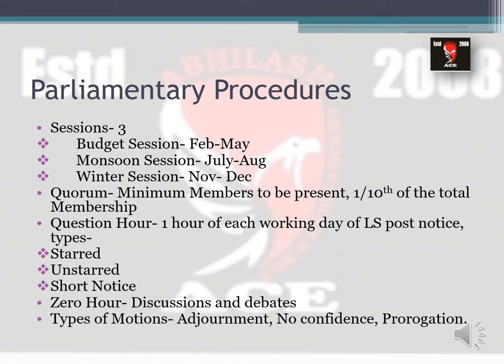Parliamentary procedures are the basic formalities which members of parliament have to undergo. First is sessions — parliament meets at least twice a year; there are three sessions: budget session, monsoon session, and winter session. As per law, parliament should meet within a gap of six months. Next is quorum — the minimum number of members required for the meeting to commence — which is one-tenth of the total membership. If fewer than one-tenth of members are present, the meeting cannot commence due to lack of quorum.